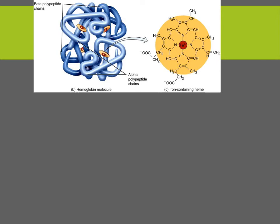There are about 280 million hemoglobin molecules in one red blood cell. Hemoglobin is composed of the heme portion — the ring-like non-protein portion — and the globin portion, which is the protein portion. In the center of each heme, there is an iron ion. This iron ion can combine with one oxygen molecule each, so each hemoglobin has the capacity to bind with four different oxygens.